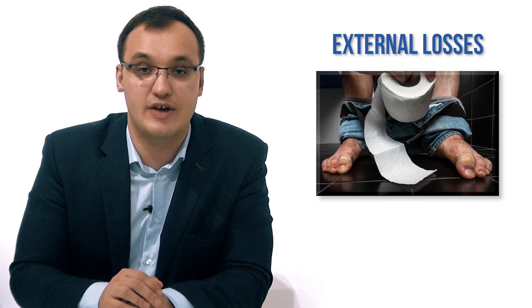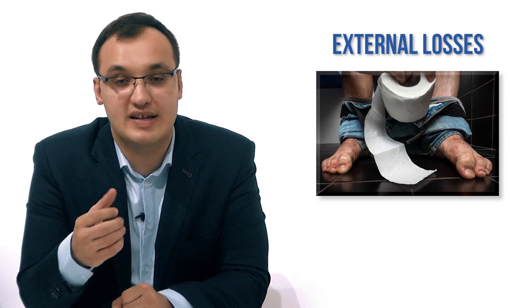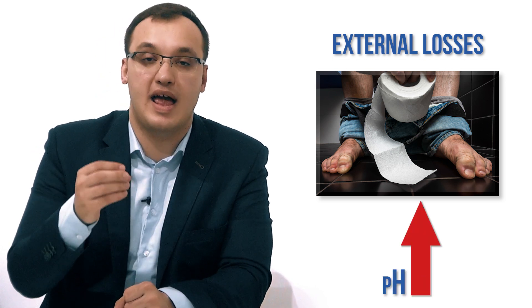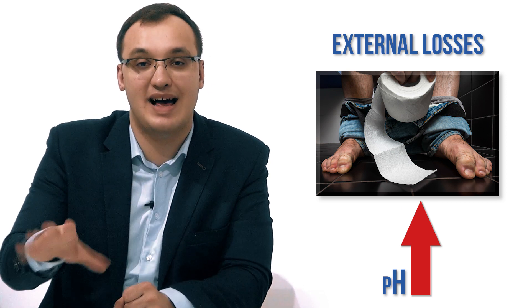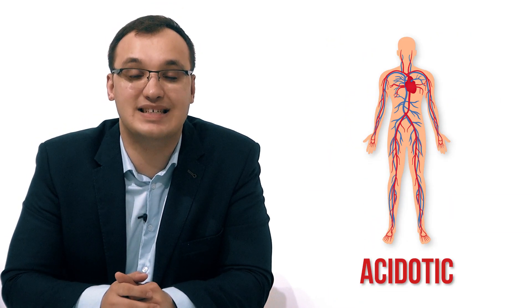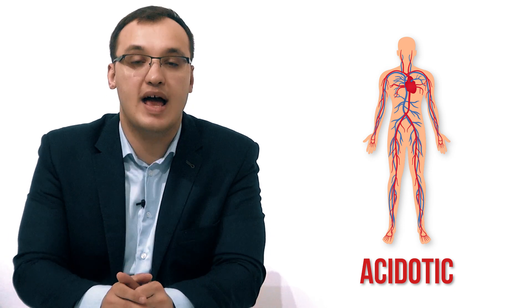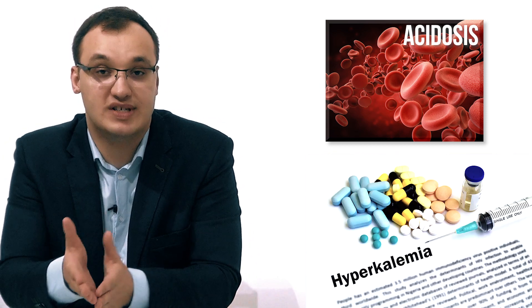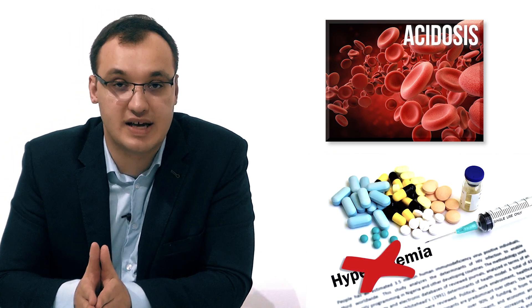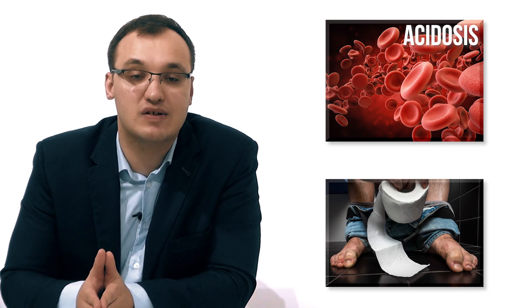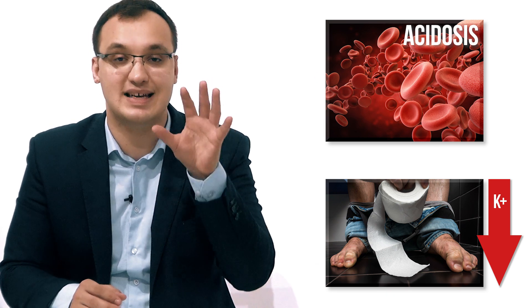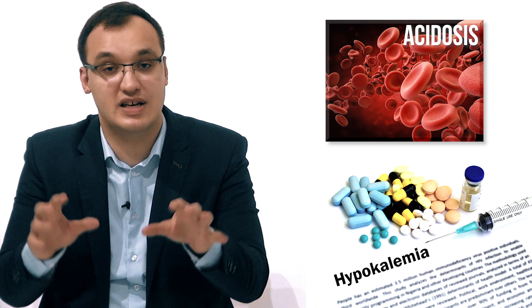For example, with diarrhea — if you have a lot of diarrhea, you lose a lot of alkalic material and ions. If you remove a lot of alkalic material, the body will become acidotic. So we would expect acidic blood and therefore hyperkalemia. But not in this case: when dealing with diarrhea, you also lose potassium in the stool, so you will see acidosis with hypokalemia — and this is an exception.